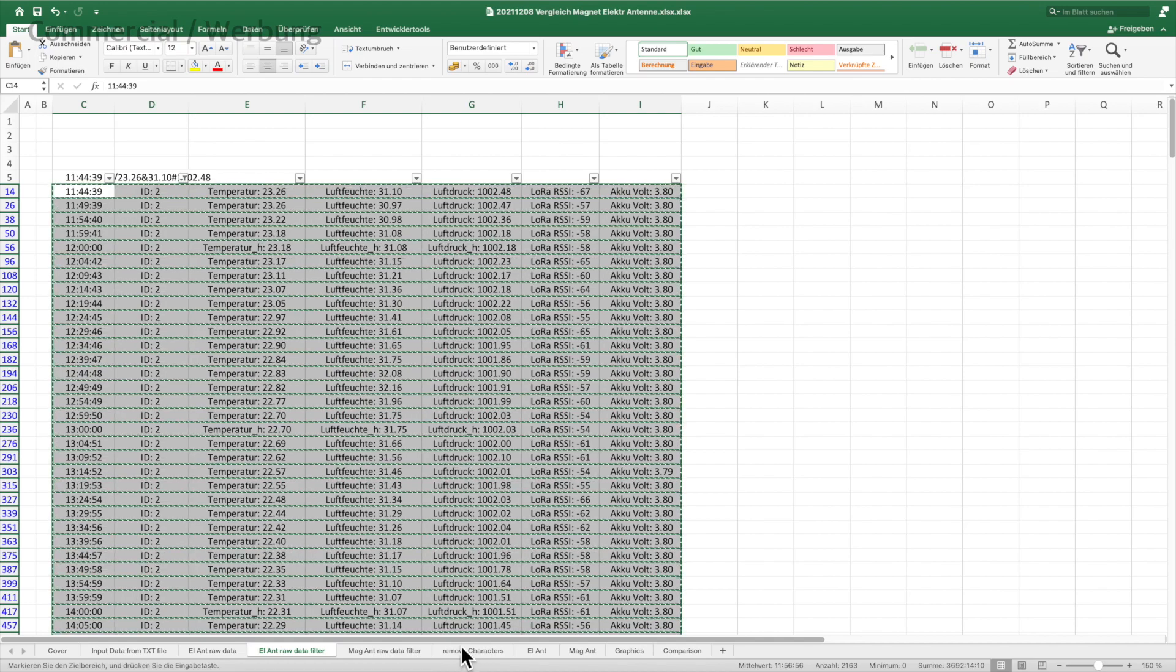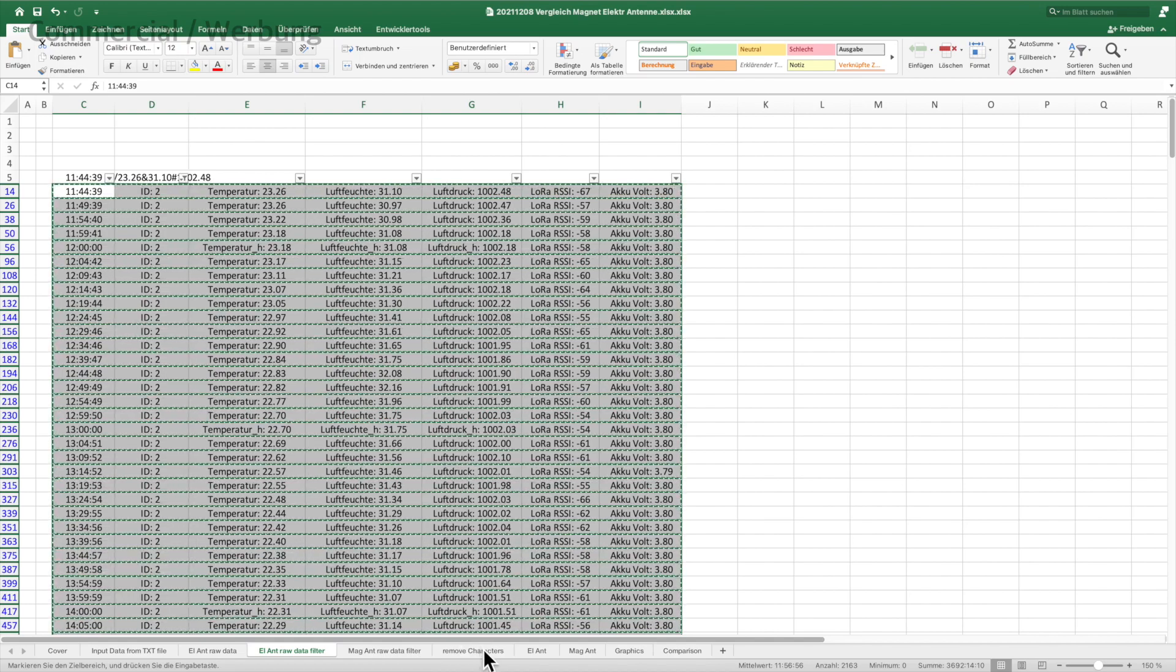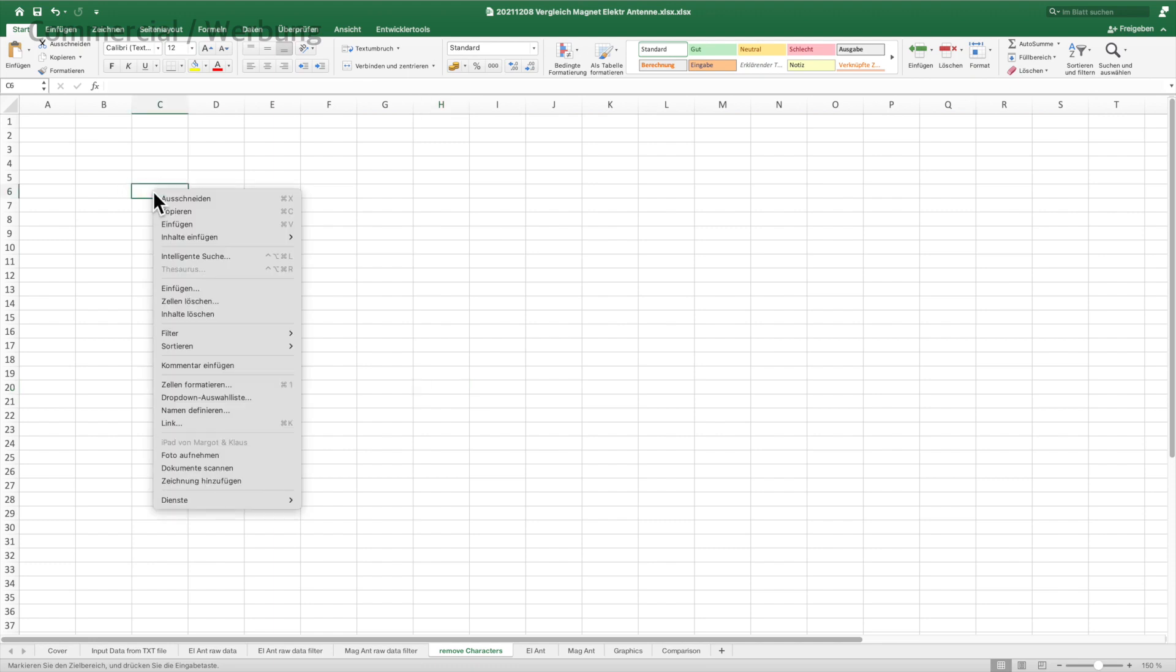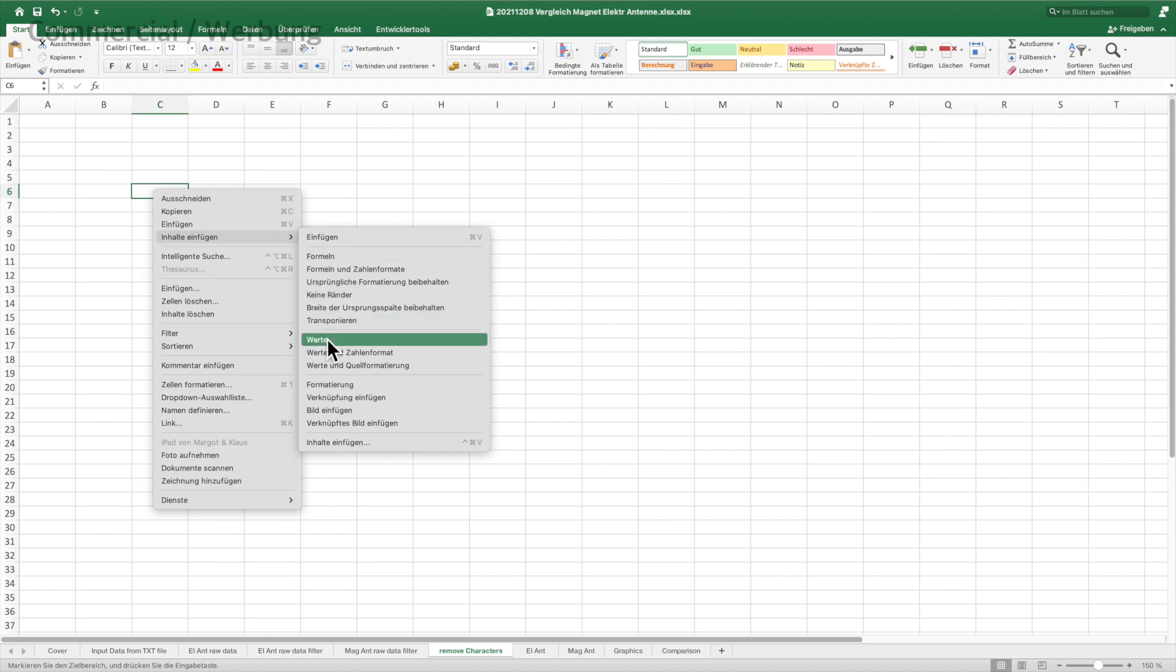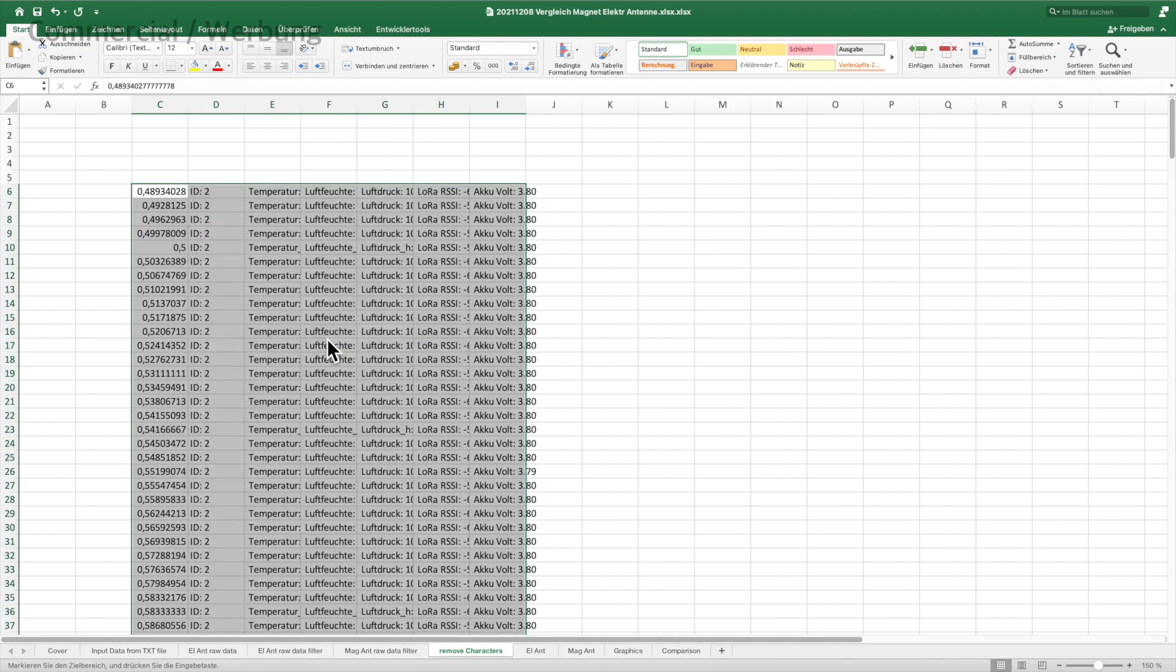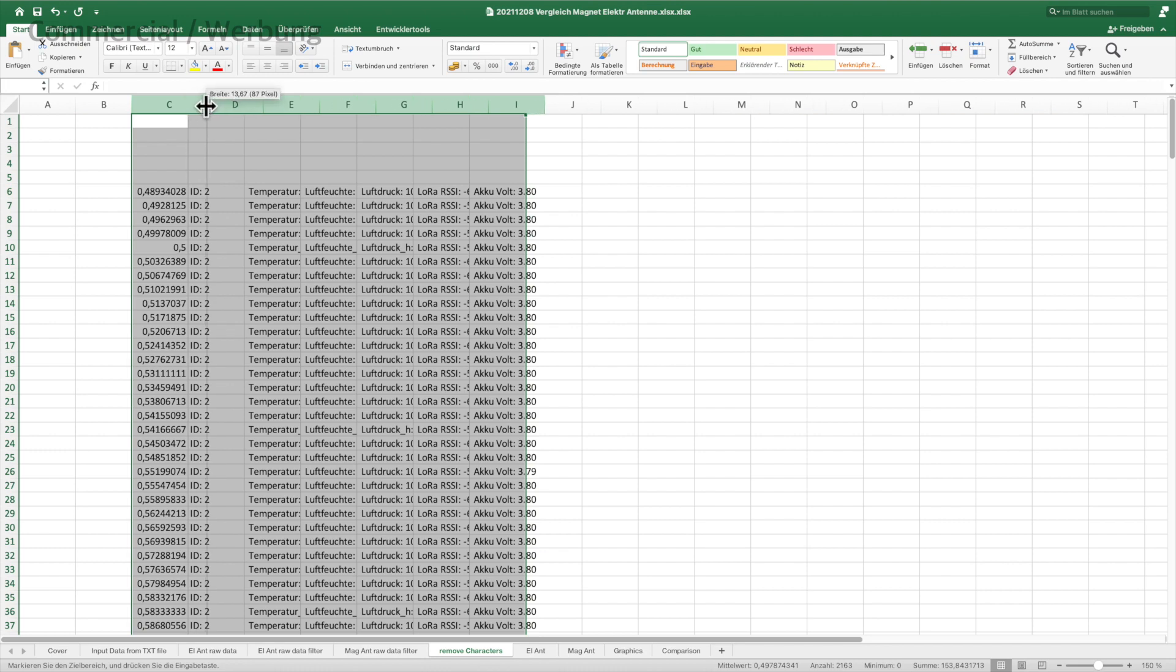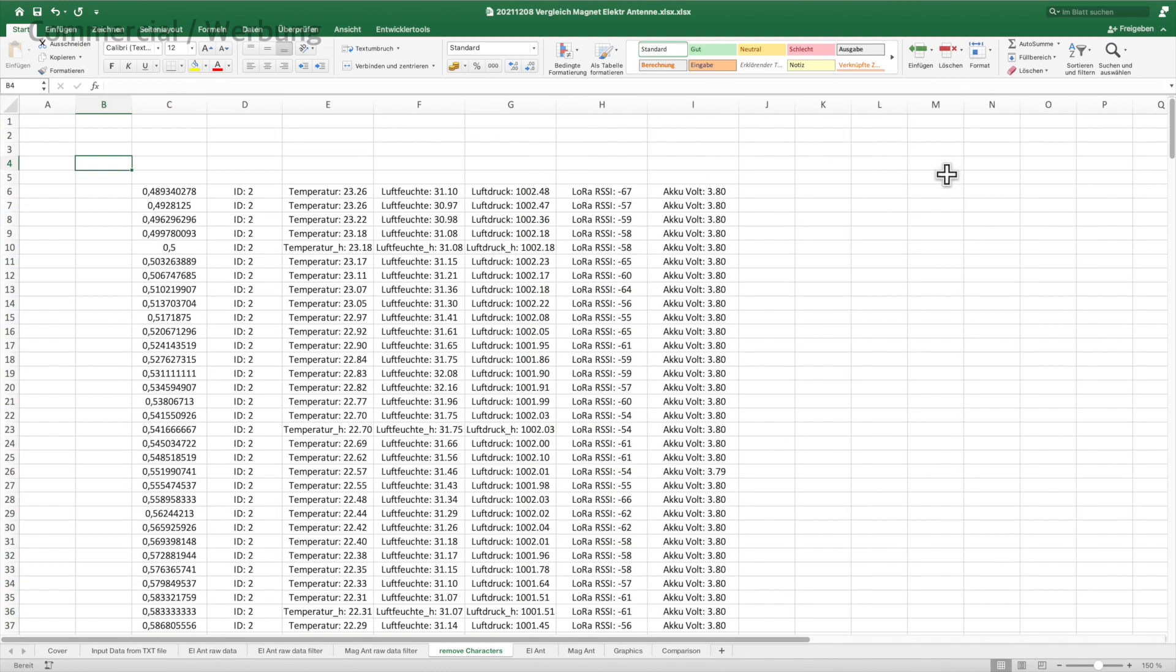Next, we copy this and paste it to another sheet, where we only paste the values. Of course, we do that for both the data set for the electric monopole antenna and the magnetic loop antenna. Now, we need to get rid of some text information, since we can only evaluate the pure numbers here.